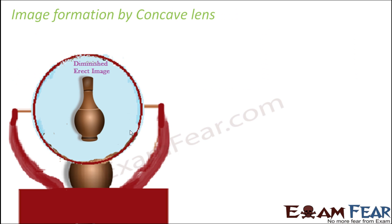Let us quickly look at image formation by a concave lens. In a concave lens, we always find erect images, diminished images, and these are virtual images. That is why we get to see them on the other side of the lens. That's one speciality of the concave lens — concave lens behavior-wise is very much similar to that of a convex mirror.